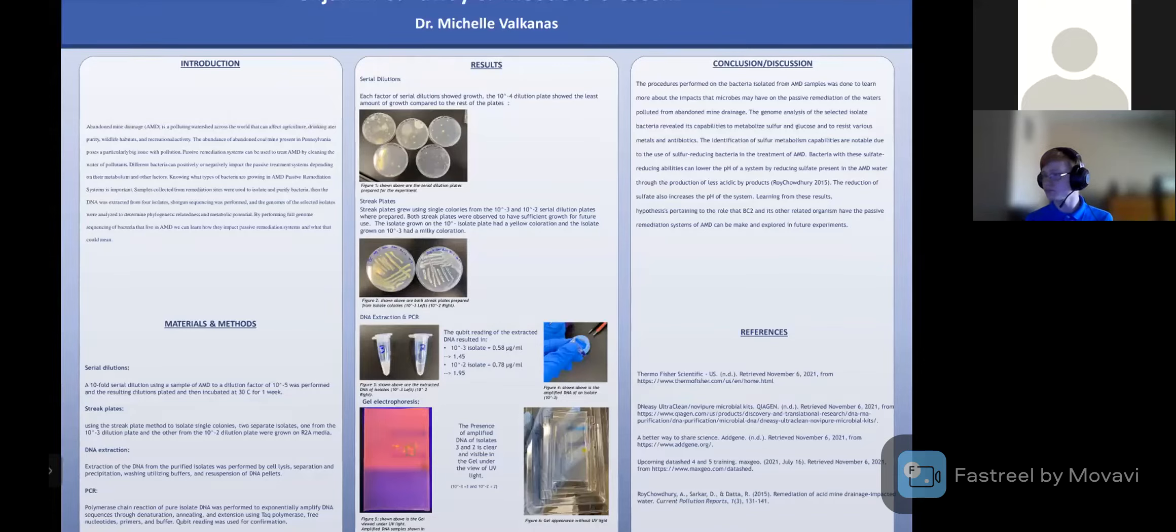Each factor of serial dilutions showed growth. Shown in the image down underneath the text, the 10 to 4 dilution plate showed the least amount of growth compared to the rest. When we moved on to make our streak plates using single colonies from the 10 to 3 and 10 to 2 serial dilution plates, both streak plates were observed to have sufficient growth for future use. The isolate grown on the 10 to negative 2 plate had a yellow coloration and the isolate grown on the 10 to negative 3 plate had a milky coloration, as shown in the image.